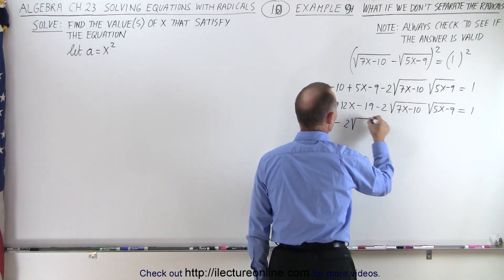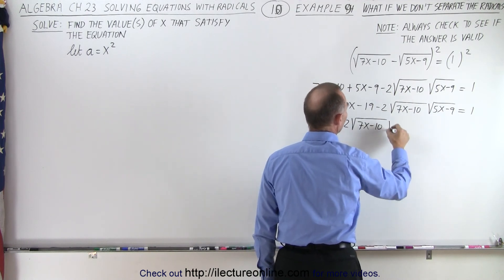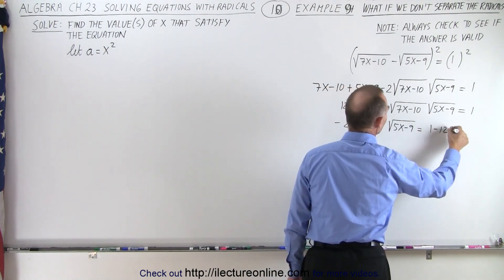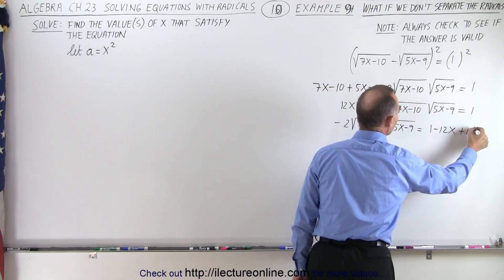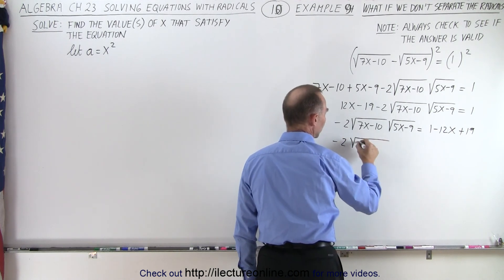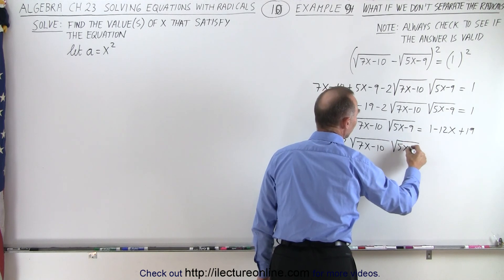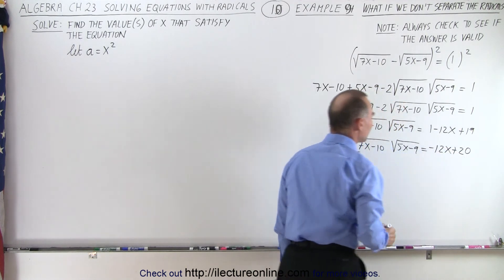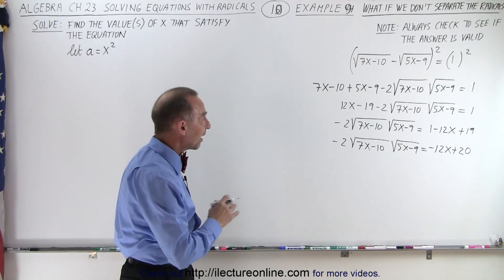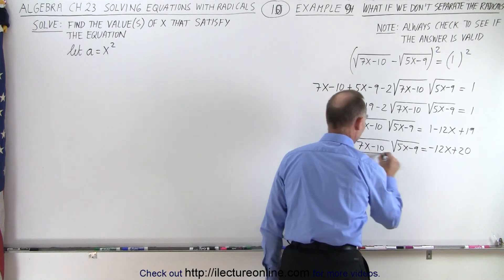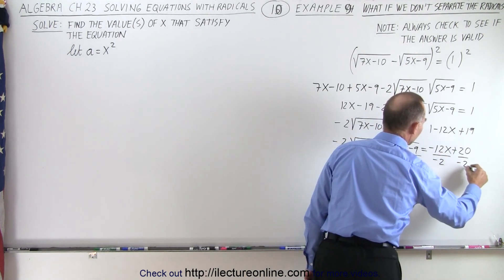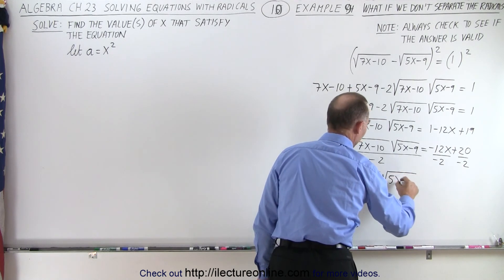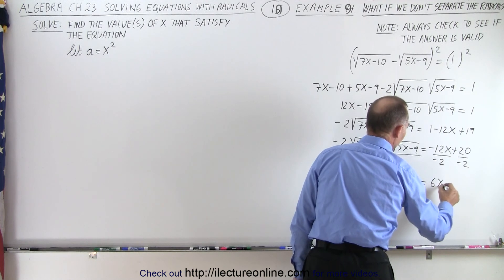Now we move all other terms to the right side, leaving minus 2 times the square root of (7x minus 10) times the square root of (5x minus 9) on the left, which equals 1 minus 12x plus 19, simplifying to minus 12x plus 20. Notice that all the terms are even, so we can divide both sides by negative 2. That gives us the square root of (7x minus 10) times the square root of (5x minus 9) equals 6x minus 10.